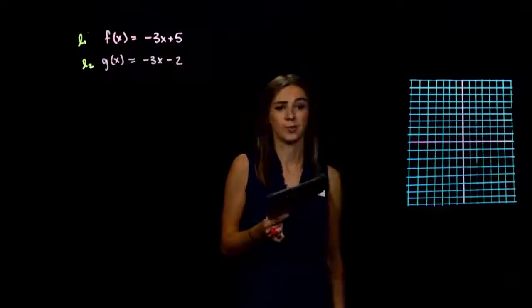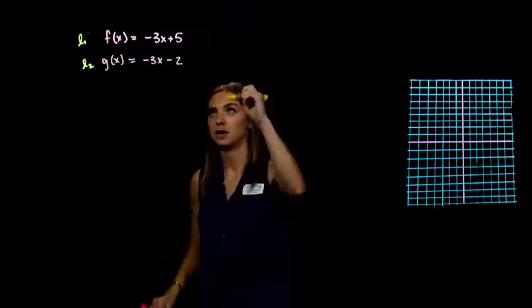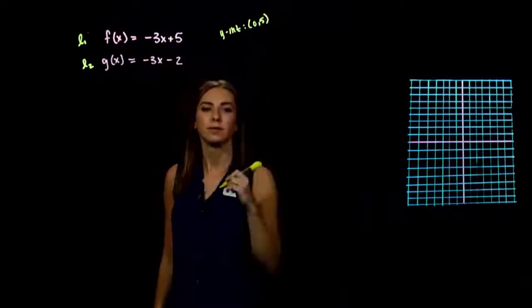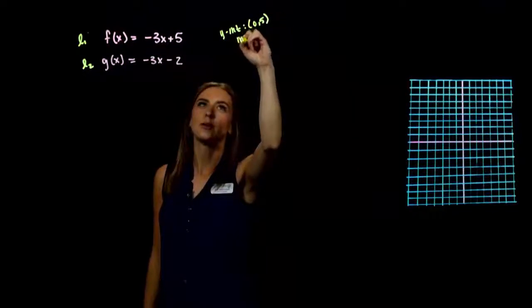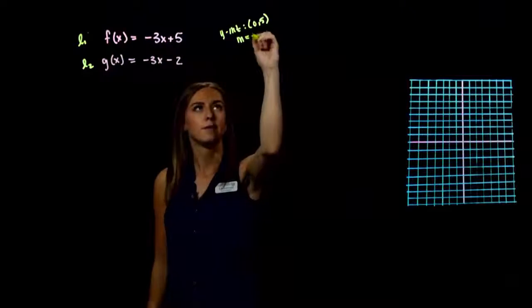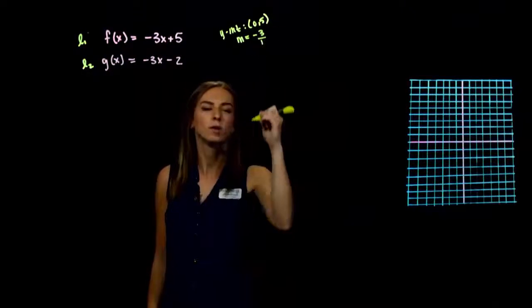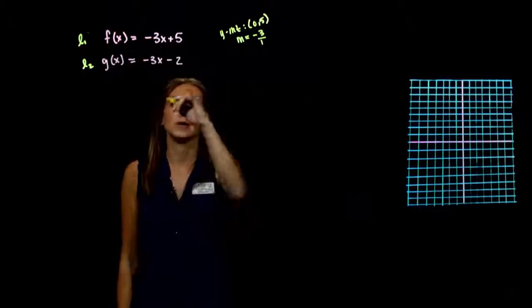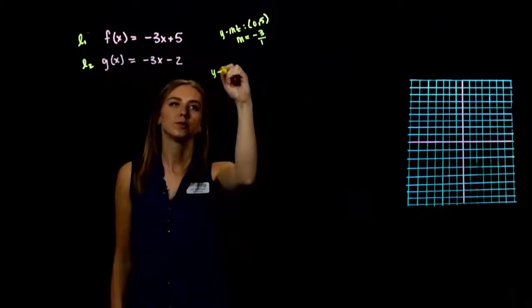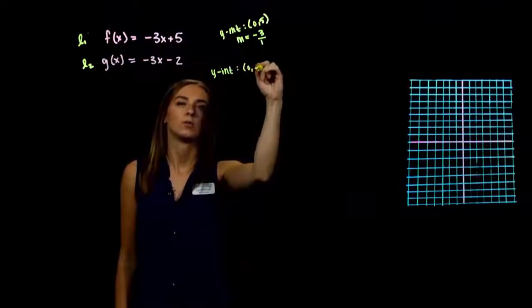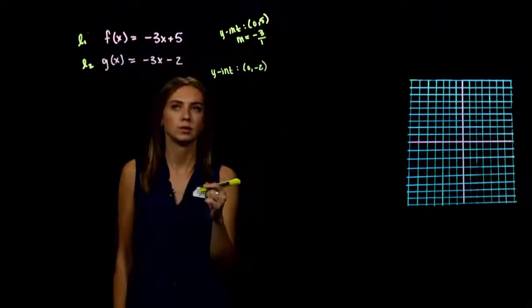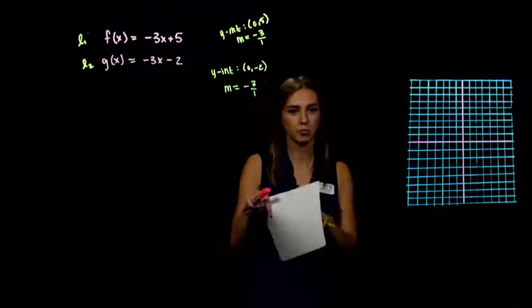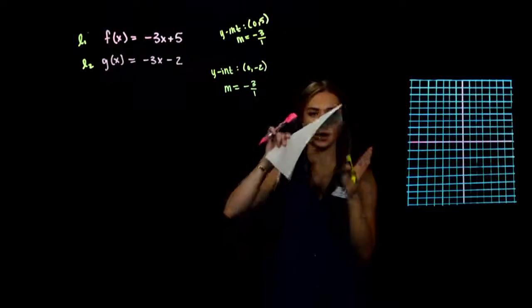Both equations are already in slope-intercept form. Line 1 has y-intercept (0, 5) and slope negative 3 over 1. Line 2 has y-intercept (0, negative 2) and slope also negative 3 over 1. They start in different places but change at the same rate — so they are parallel.